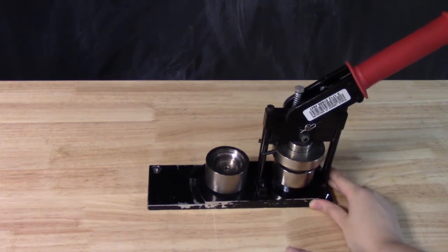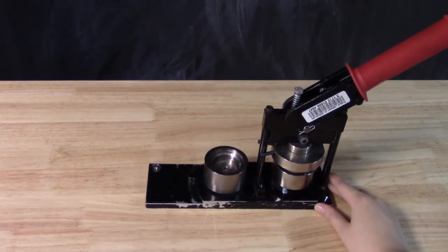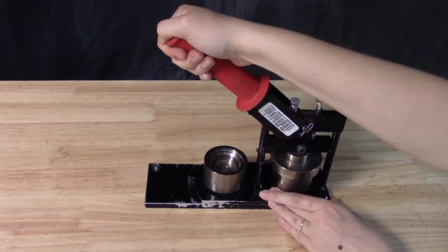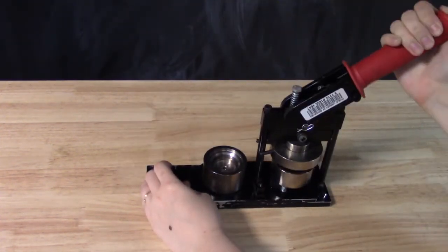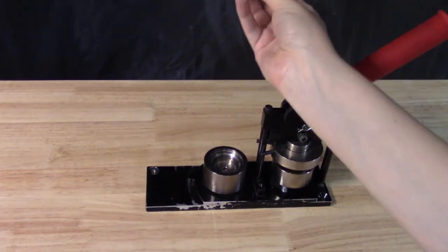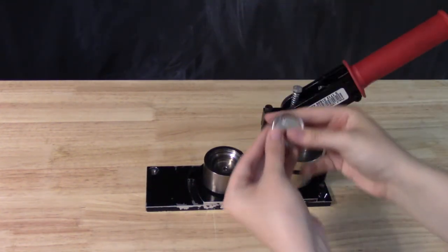Push the lever down over the button. You might need to stand up to get enough force. When you lift the lever, you shouldn't see any button parts left in the compartment because they're being held up under the lever.